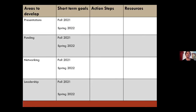Here's an example of an IDP template. This student identified four areas: presentations, funding, networking, and leadership — identified after self-reflection and conversations with mentors about what to focus on for the 2021–22 academic year. They identify short-term goals; some people also add long-term goals. For students it's a little hard to think five to ten years out, so most focus on short-term goals, which is more manageable for fall and spring, with action steps, strategies, and resources.